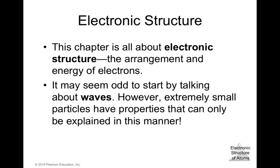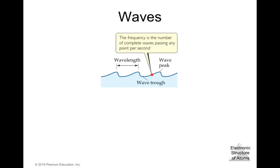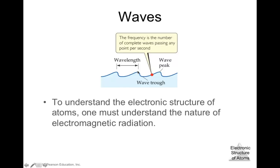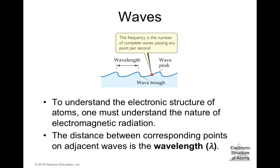Here we have a wave. The distance between one crest and the next crest — those peaks — is known as the wavelength. To understand the electronic structure of atoms, one must understand the nature of electromagnetic radiation. The distance between corresponding points on adjacent waves is the wavelength, represented by the Greek symbol lambda.